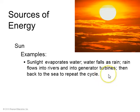Sources of energy. Our main source of energy is the sun. There's lots of ways we can get energy from the sun. One is this water cycle. Sunlight comes down on the earth, uses its energy to evaporate the water, which then causes rain. Rain flows in rivers, and into generator turbines, which gives us useful energy, and then that water returns to the ocean.